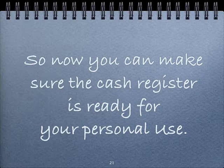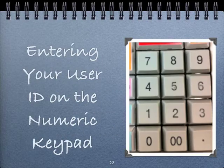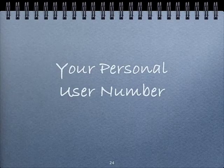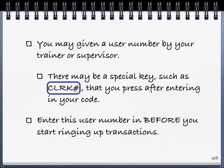Now you can make sure the cash register is ready for your personal use. You're going to enter your user ID on the numeric keypad. Note that the number keys on the cash register are upside down from the number keys on your telephone — it's the same layout as an adding machine. Your personal user ID number will be given to you by your trainer or supervisor. There may be a special key such as CLRK pound that you press after entering your code.